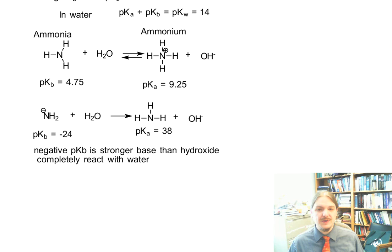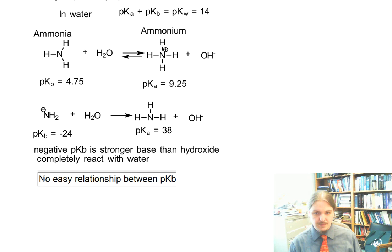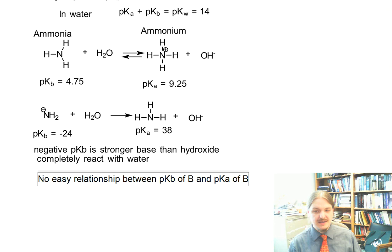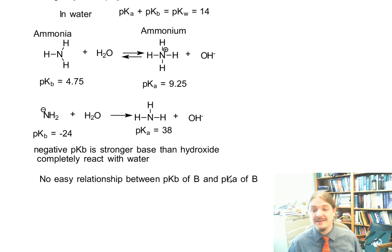And then I just wanted to finish up with, there's no easy relationship between the PKB of a base B and the PKA of that same base B. There is a relationship between the PKB of B and the PKA of BH+, the conjugate acid. But there's no easy relationship between the basicity of B and the acidity of B. And it is possible that under certain circumstances, something can be both a decent base and a decent acid.